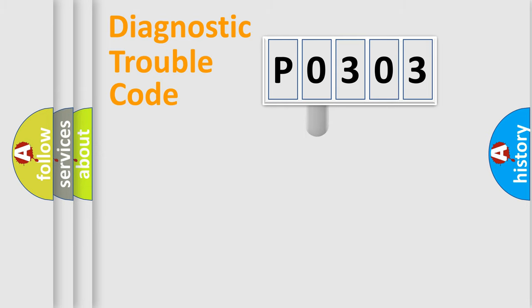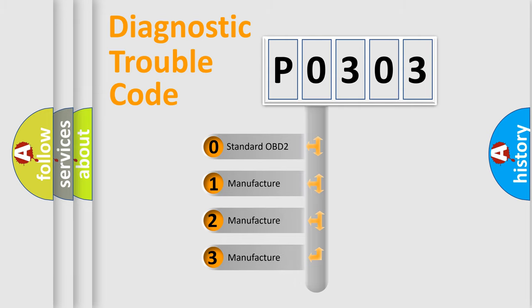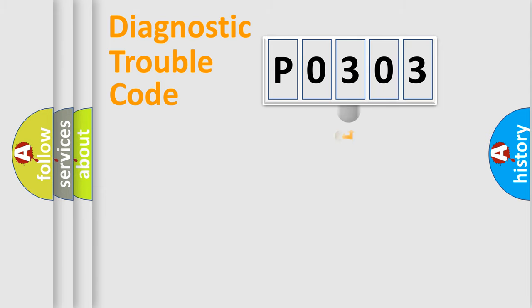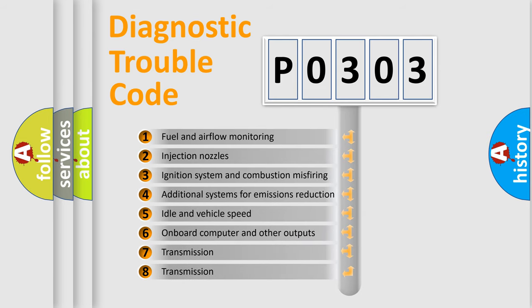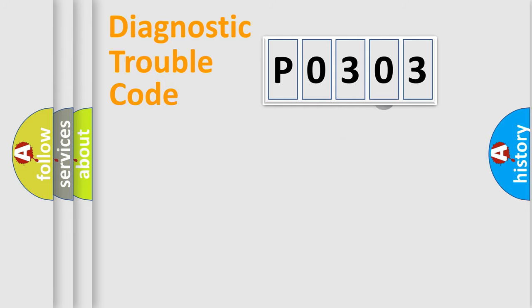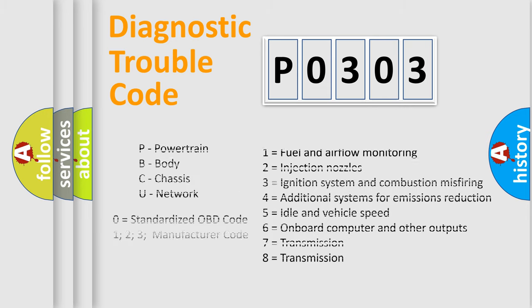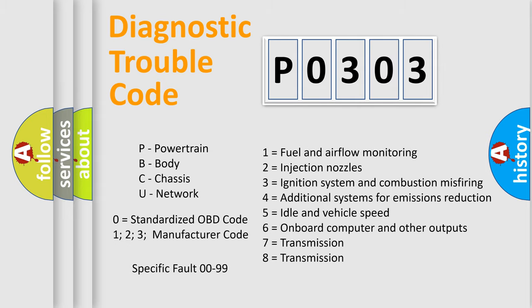This distribution is defined in the first character of the code. If the second character is expressed as zero, it is a standardized error. In the case of numbers 1, 2, or 3, it is a manufacturer-specific error. The third character specifies a subset of errors. This distribution is valid only for the standardized DTC code. Only the last two characters define the specific fault of the group, and this is valid only when the second character is zero.